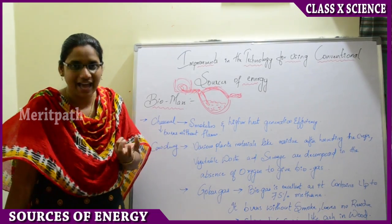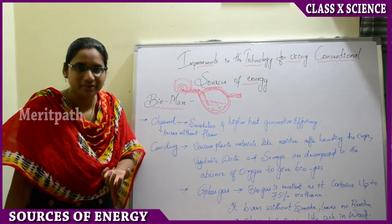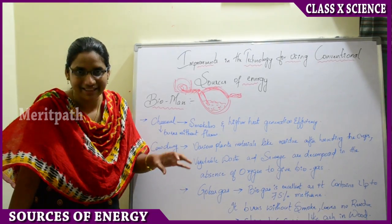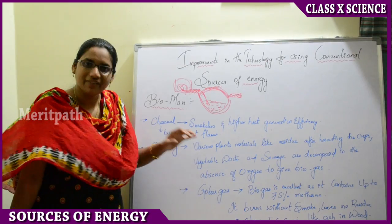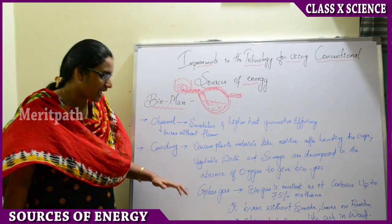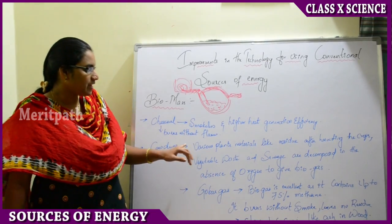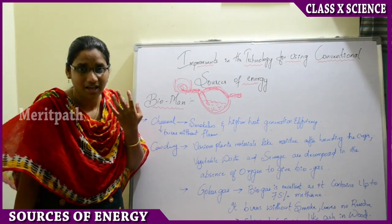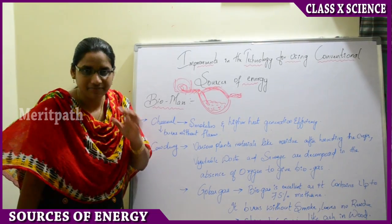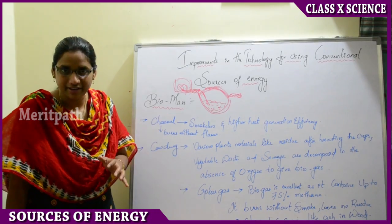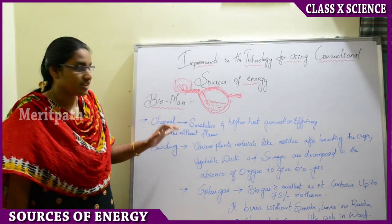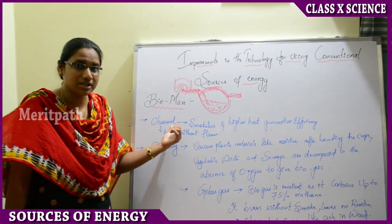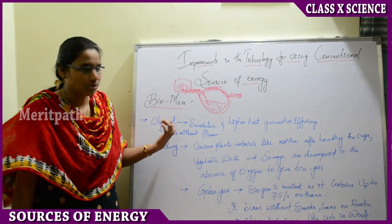This gas, known as biogas or gobar gas, is very useful for household cooking purposes. It is smokeless and has higher efficiency. It does not leave any ash, unlike when we burn wood, sticks, or dry plants. Charcoal is also preferred for cooking as it produces very little pollution and burns without flames.